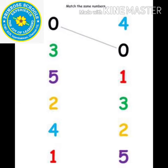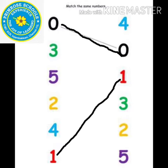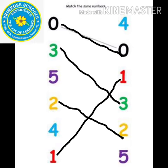The numbers are written on both sides. We need to look for the same number and match it. Are you able to identify 0 on both sides? Yes, then match it. Next, are you able to identify 1 on both sides? Yes, match it. Next, are you able to identify number 2 on both sides? Then match it. Are you able to identify number 3? Yes, then match it. Next comes 4, are you able to identify number four?